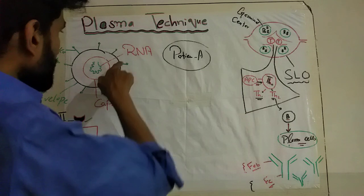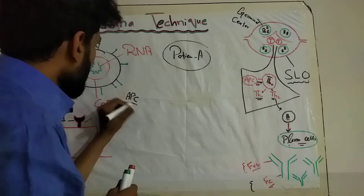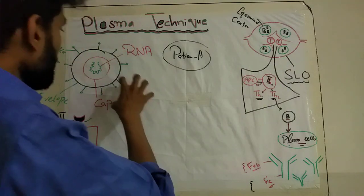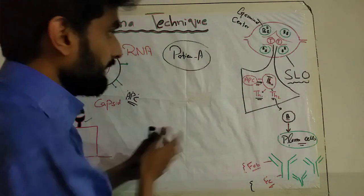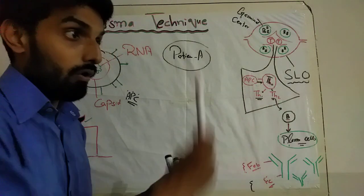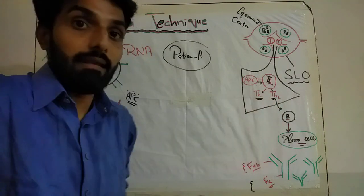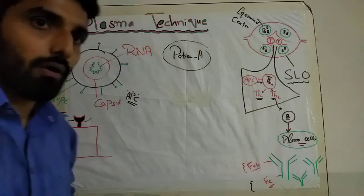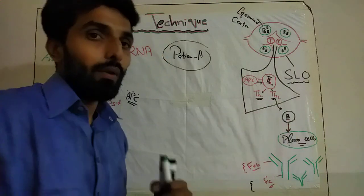When the coronavirus enters the body, antigen-presenting cells (APCs) take up the coronavirus antigens and travel to the lymph node, where they present the spike protein to TH0 cells, asking them to identify it and get activated. This TH0 cell then gets activated and is converted into TH1 and TH2 cells. TH1 is related to cytotoxic T cell-mediated immunity. TH2 basically activates the B cell.